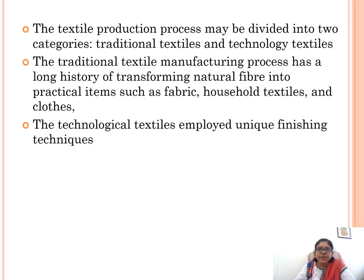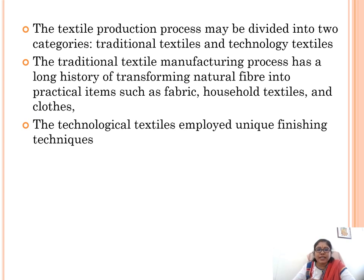Textile production process may be divided into two categories. One is traditional textile and another one is technology textile. Traditional textile manufacturing fulfills our basic needs like fabric, household textiles, furnishing items, and clothes. Technology textile is applied for specialty fabrics like fire protection, space garments, and armor clothing. These are the two categories in our manufacturing.